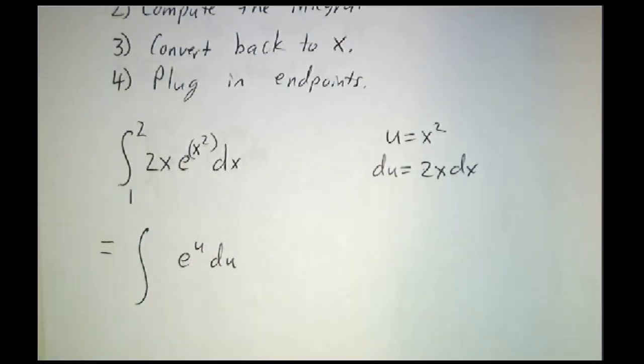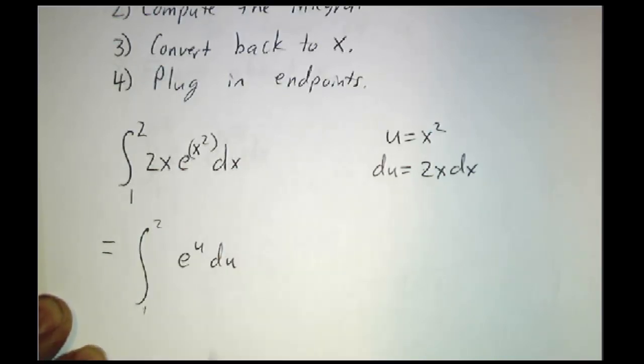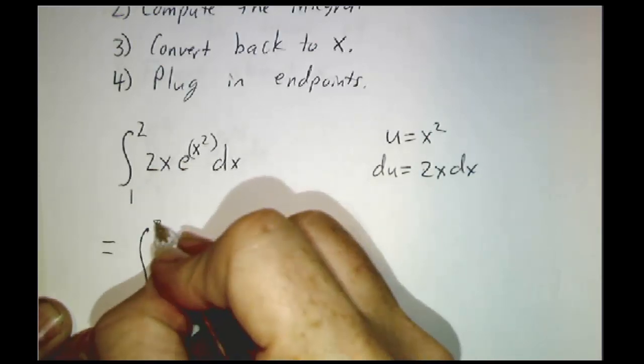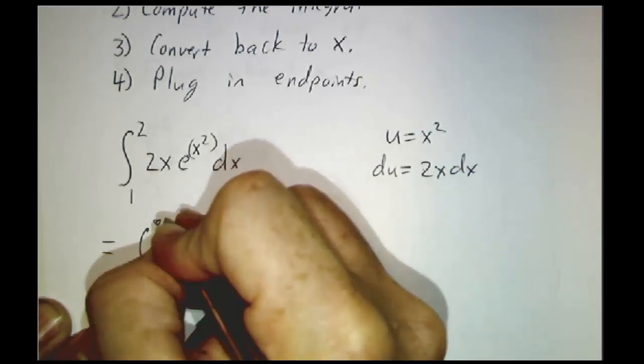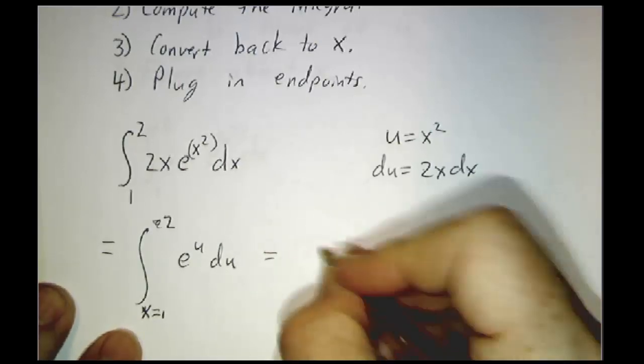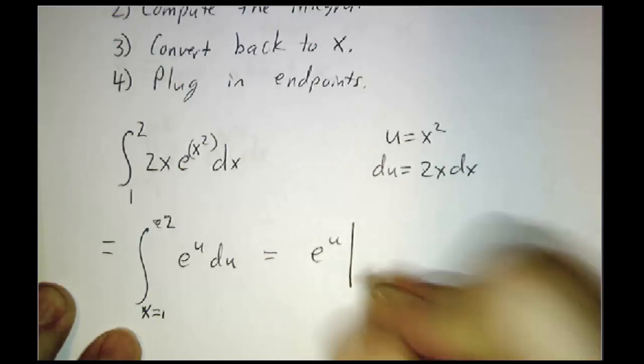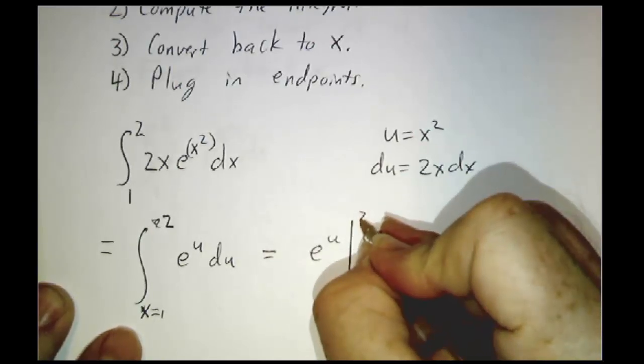We'd say that this is the integral of e to the u du. Now it's a little bit tricky to write down what you mean by the limits of integration. You don't want to just write 1 and 2 because that would mean as u goes from 1 to 2. That's not right. You want the limits as x goes from 1 to 2. So sometimes they explicitly write x equals to say which variable is going from 1 to 2.